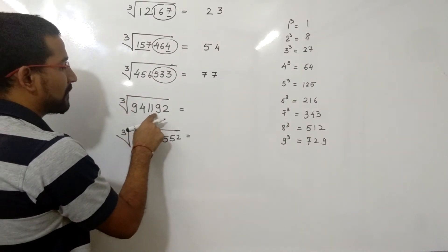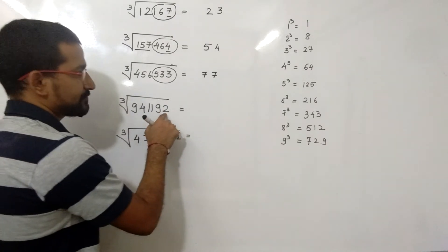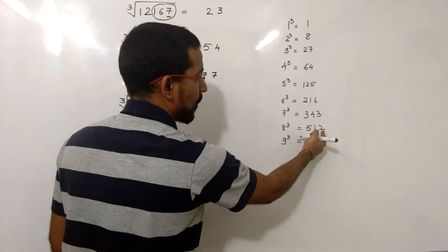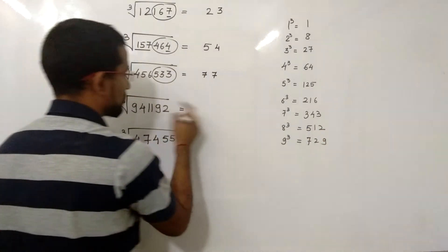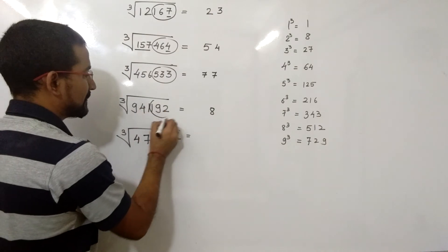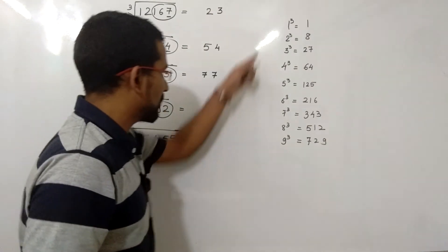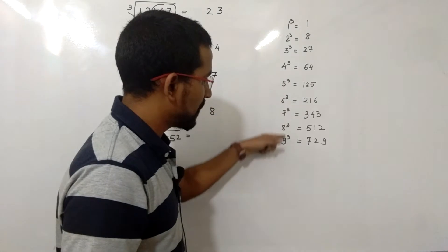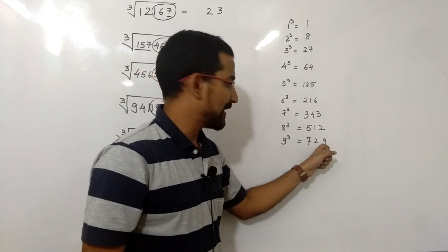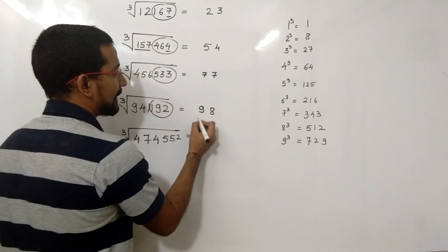Now cube root of 941192. The unit place value is 2. The cube that contains 2 in its unit place is 512, which is the cube of 8, so the unit place value will be 8. Leave out the last 3 digits; remaining is 941. Is there any cube equal to 941? No. Less than 941 is 729, and 729 is the cube of 9. So the answer is 98.